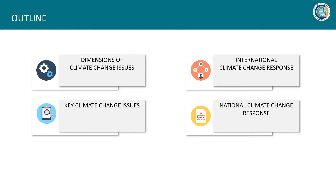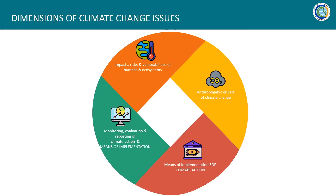For the dimensions of climate change, we've already heard the first two: impacts, risks, and vulnerabilities of humans and ecosystems are those related to adaptation. Anthropogenic drivers of climate change are those related to mitigation. And we also add two more — means of implementation for climate action, or resources needed to implement adaptation or mitigation measures. And fourth, monitoring and reporting of climate action and means of implementation, or how we evaluate and track the progress of our adaptation and mitigation measures and the value of support being provided internationally.